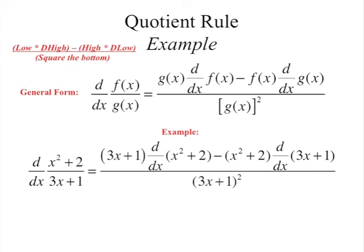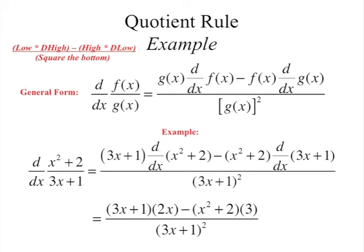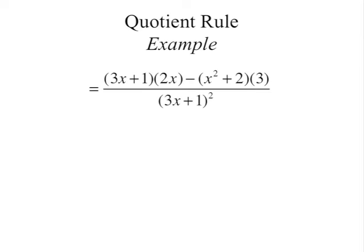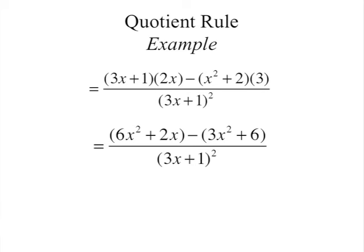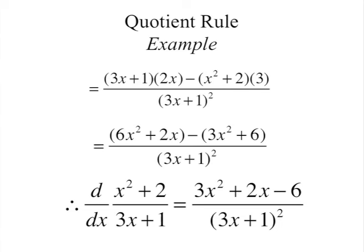For example, differentiating x squared plus 2 over 3x plus 1: low (3x plus 1) times the derivative of high (x squared plus 2), minus high (x squared plus 2) times the derivative of low (3x plus 1), all over (3x plus 1) squared. The derivative of x squared plus 2 is 2x; the derivative of 3x plus 1 is 3. Multiplying through and cancelling like terms gives 3x squared plus 2x minus 6 over (3x plus 1) squared. You can expand the bottom, but it's fine leaving it as is. Note: you don't have to use the quotient rule — you can bring the denominator up as a negative exponent and use the product rule instead.